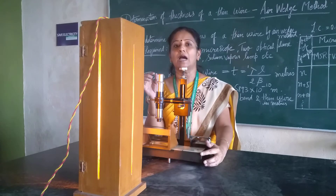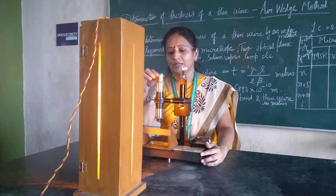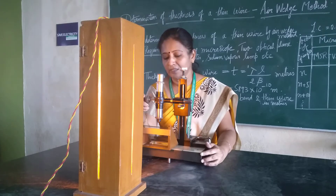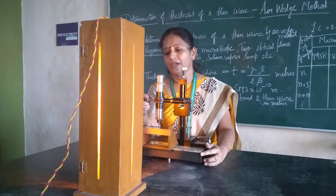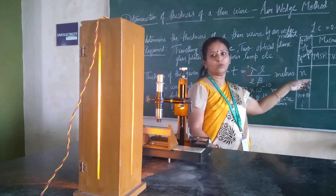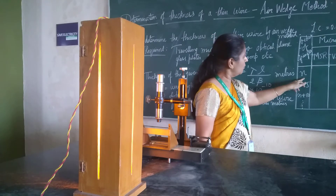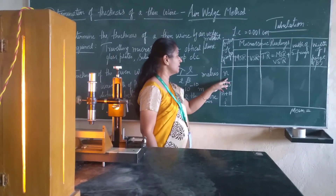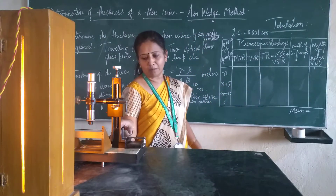Focusing must be done to capture the interference pattern between the rubber band and the thin wire. Once it is focused, we calculate the order of the fringe. The vertical cross-wire is placed at one dark fringe and it is named N. When we coincide a dark fringe with the vertical cross-wire, we record the MSR, DSR, and total reading from the traveling microscope.